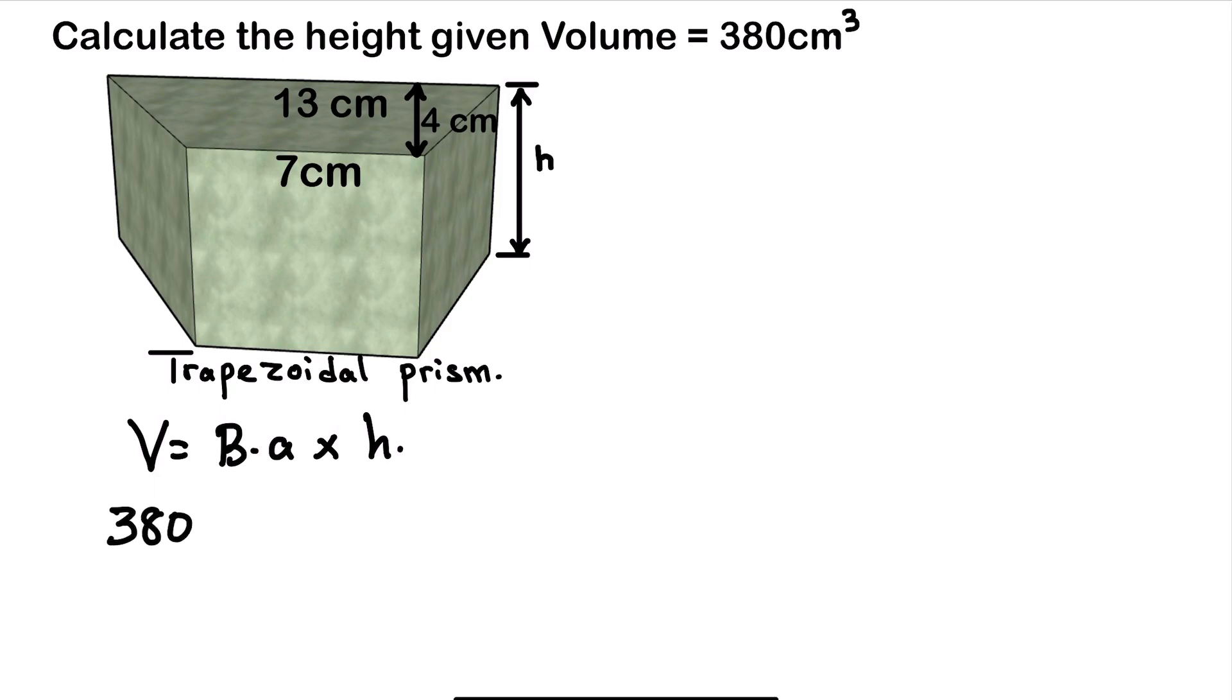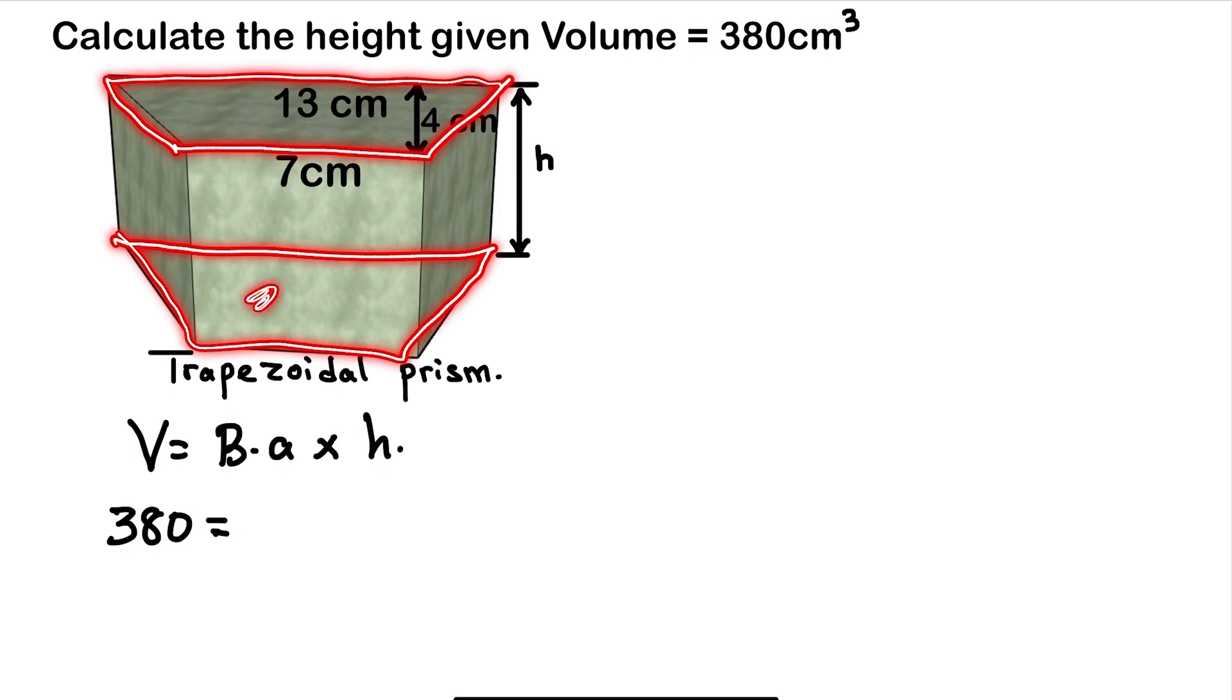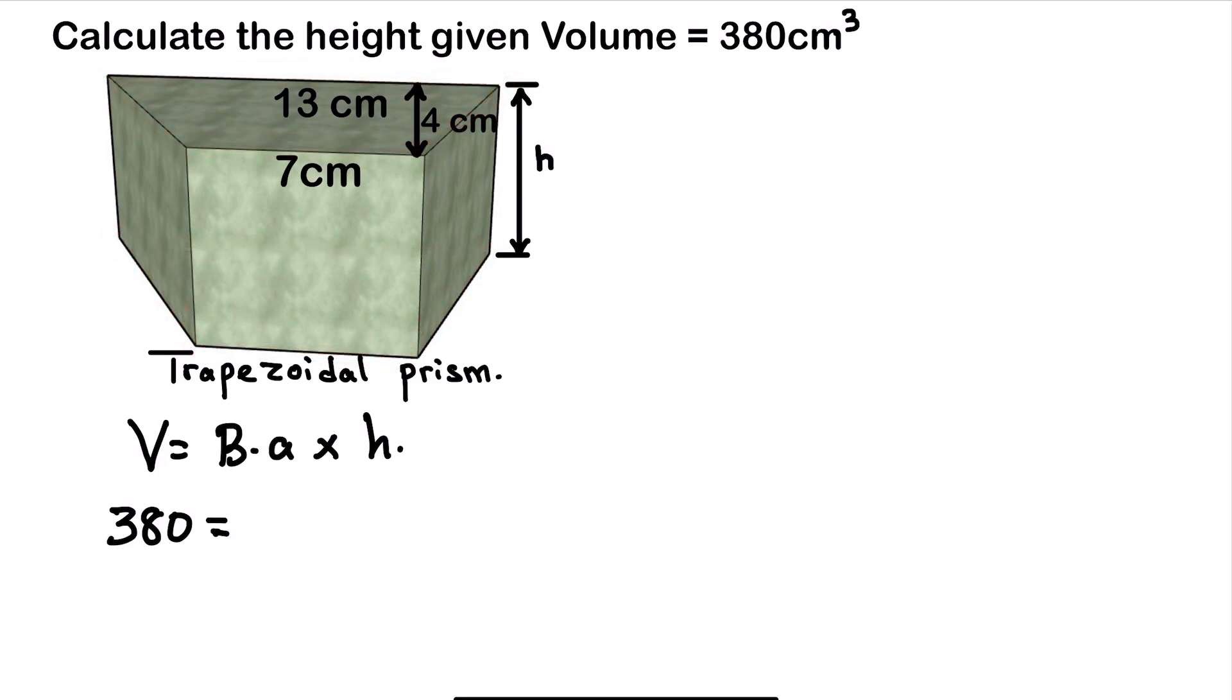We have 380 should be equals to, we don't know the base area yet, so we need to calculate the base area so that we'll be able to calculate the height. So looking at our shape, this is a trapezoidal prism. So it means the base is a trapezoid. In other words, you should know that a trapezoid has two phases that are equal. And those phases that are equal is the base. Like we can see this phase and this phase are equal. So this is the base of the trapezoid. And also we need to calculate the area of one base, not two. So the area of just one base.